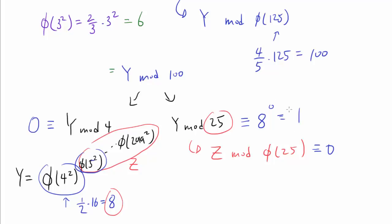By the Chinese remainder theorem, we know Y mod 100 is either going to be 1, and keep adding 25 to this. So 26, 51, or 76. But we gotta make sure that Y mod 4 is 0. So that's telling us that Y mod 100 must be 76.